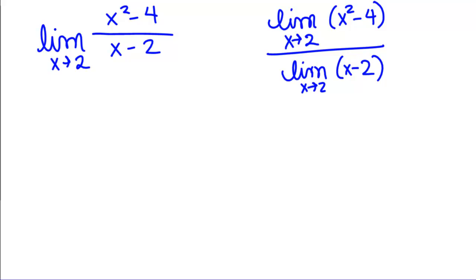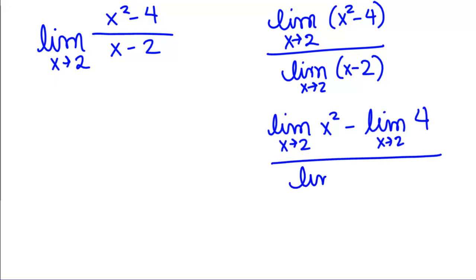Each of these limits we can split apart further using the limit laws. If we do that, we're going to see that we're going to have limit as x goes to 2 of x squared on top minus limit as x goes to 2 of 4 divided by limit as x goes to 2 of x minus limit as x goes to 2 of 2.